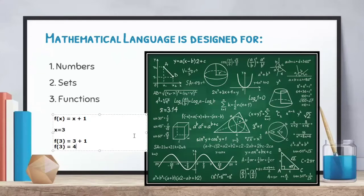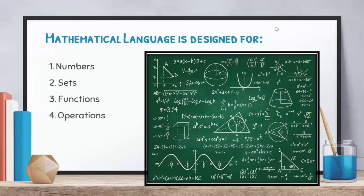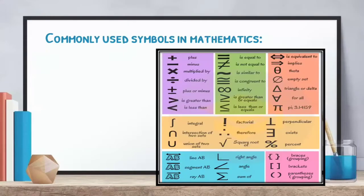Next is operations. We are already familiar with addition, subtraction, multiplication, and division. In computer science, we also have binary operations — we'll learn that if we take subjects in computer science. For now, let's confine ourselves to the four basic arithmetic operations: addition, subtraction, multiplication, and division.